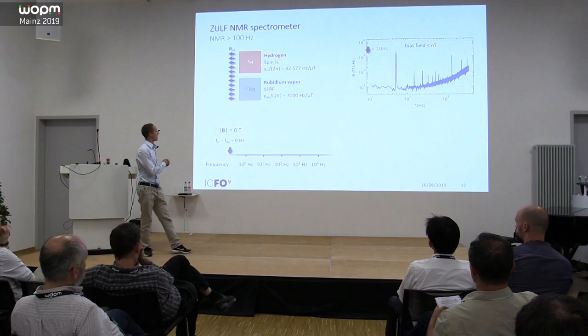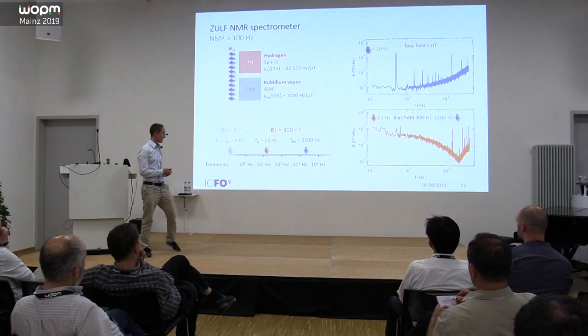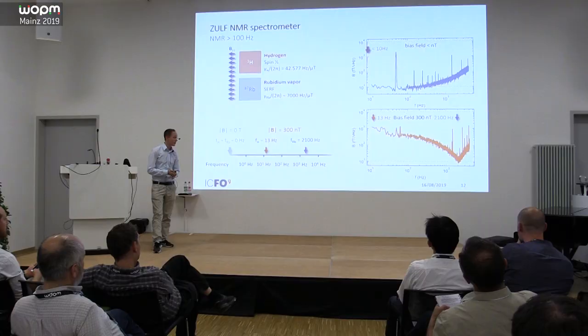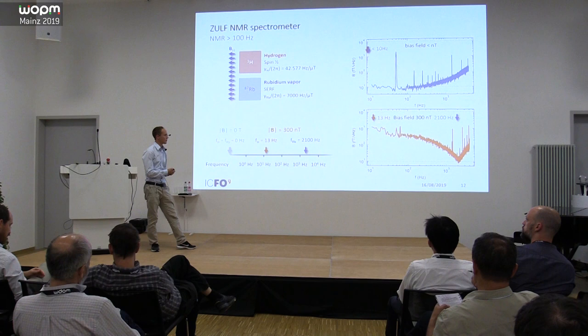To get the hydrogen to oscillate at that frequency, you have to apply a magnetic field, and once you apply a field, the noise floor drastically changes. For example, only 13 hertz correspond to a 300 nanotesla magnetic background field, and that shifts the resonance of the rubidium atoms to a frequency of about 2.9 kilohertz. In other words, once we made the protons oscillate at 13 hertz, we are no longer sensitive to that frequency, and that is a real limitation if you just use a simple approach and want to go to much higher frequencies.